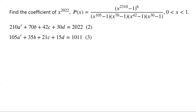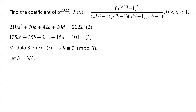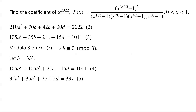The coefficient of X to the power of 2022 in P of X equals the number of non-negative integer solutions of equation 3. Since 105, 21, 15, and 1011 are all multiples of 3, taking equation 3 modulo 3 gives B is congruent to 0 modulo 3. We let B equal 3B'. Substituting into equation 3 gives 105A' plus 105B' plus 21C plus 15D equals 1011. We label this equation 4. The coefficient equals the number of non-negative integer solutions of equation 4. Dividing equation 4 by 3 gives 35A' plus 35B' plus 7C plus 5D equals 337. We label this equation 5.